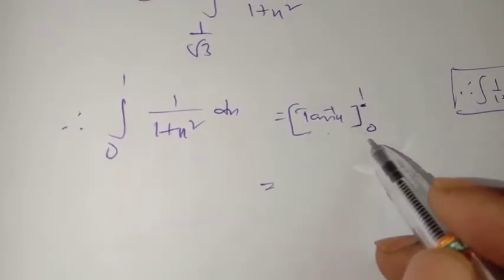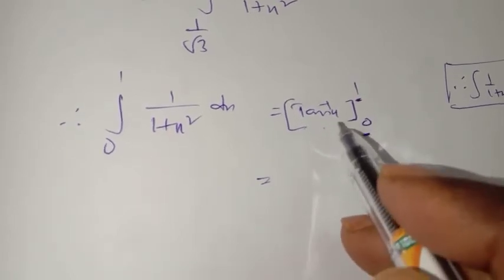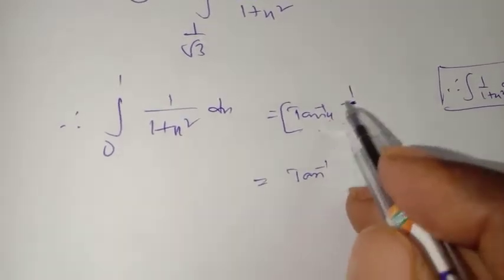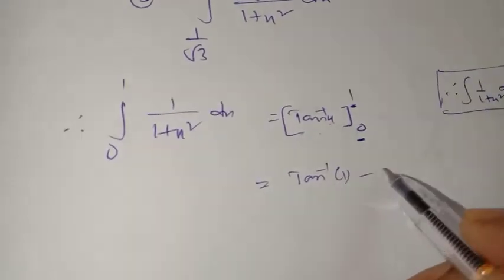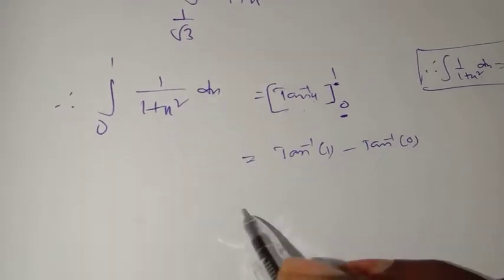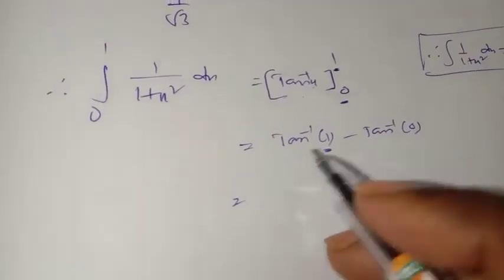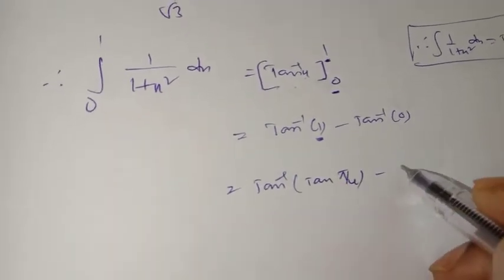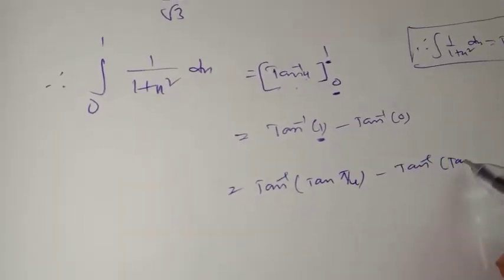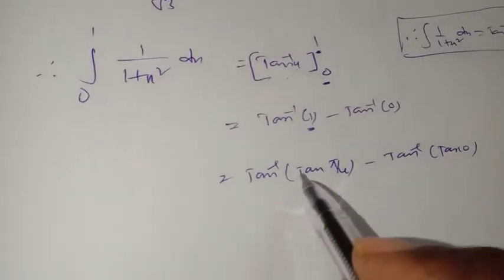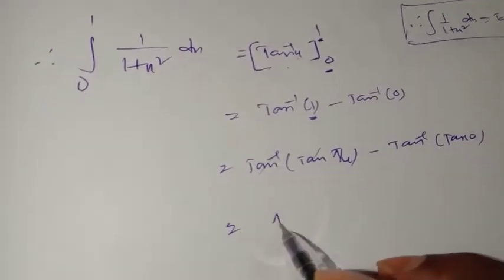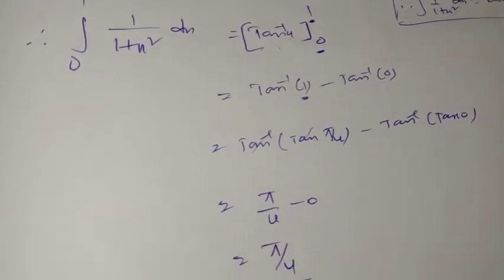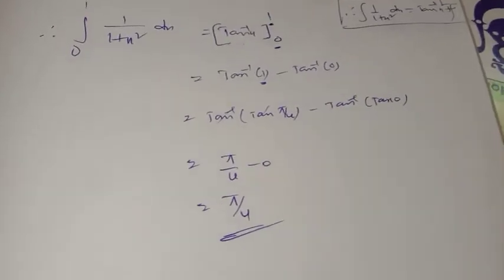First substitute the upper limit 1, then subtract tan inverse of 0. tan inverse of 1 is 45 degrees, which is π/4. tan inverse of 0 is 0. So the answer is π/4 minus 0 equal to π/4.